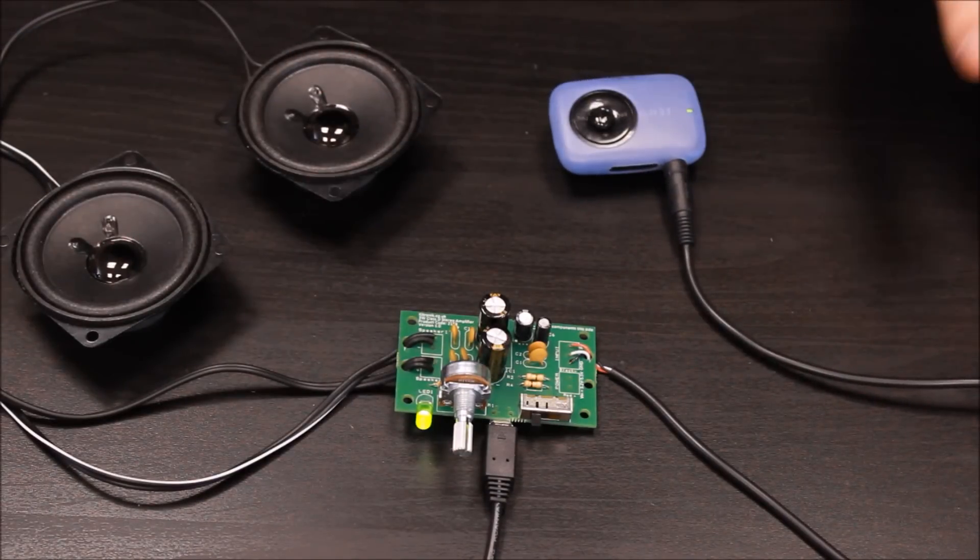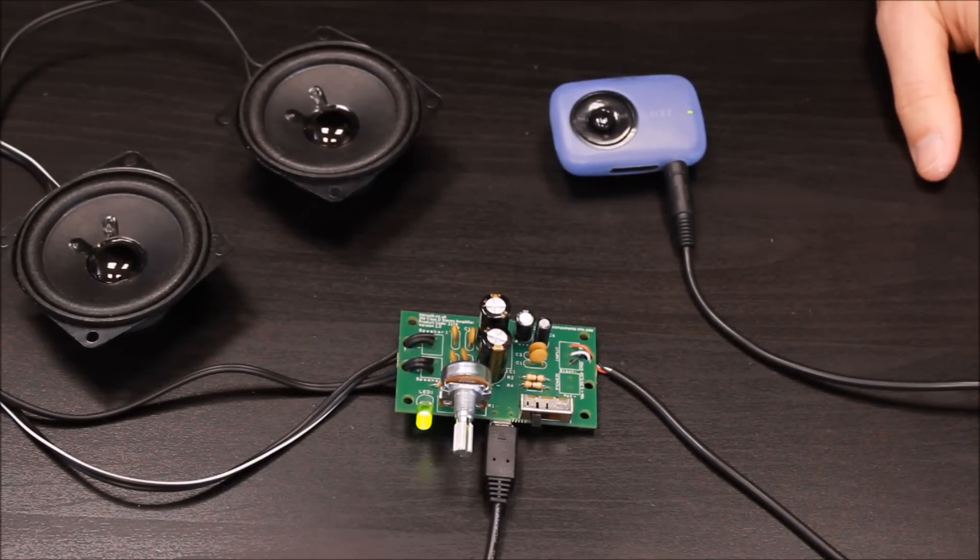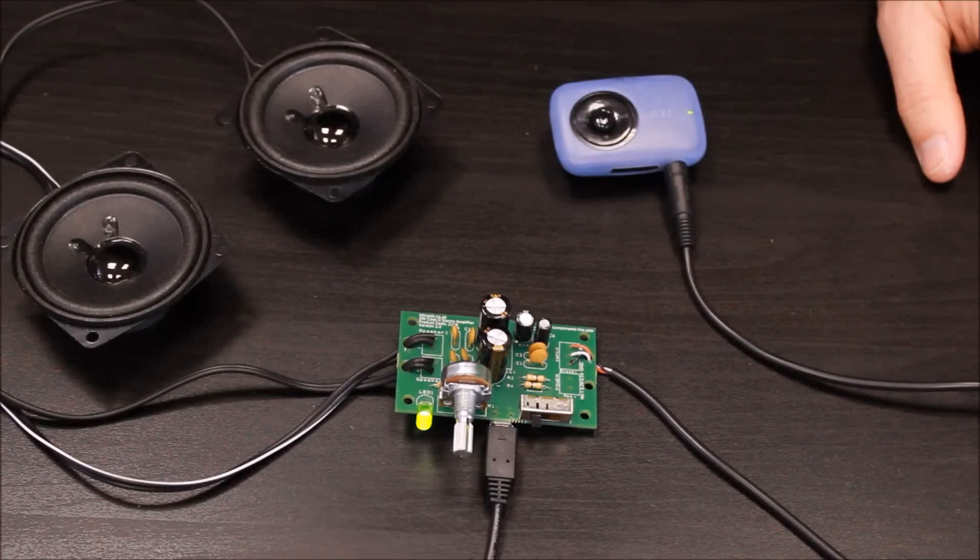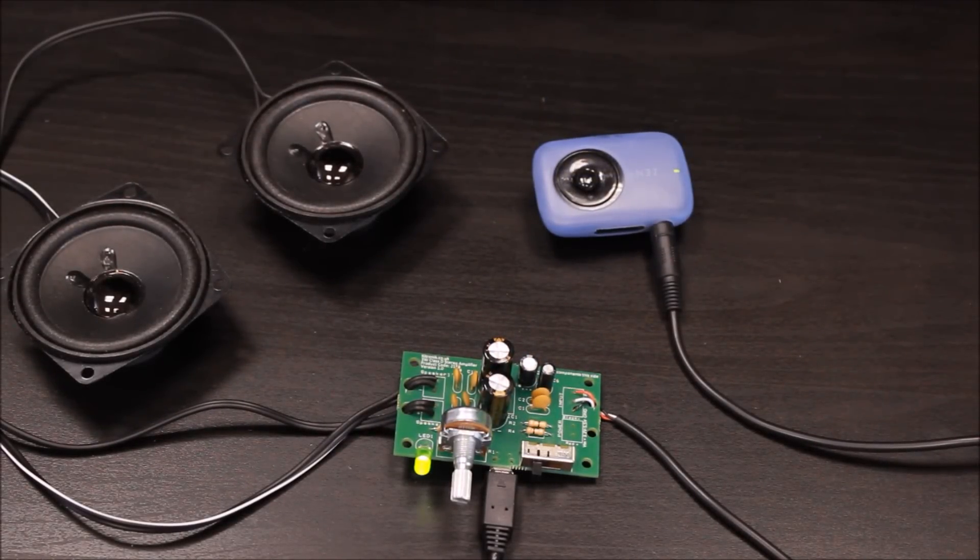So there you have it, a demonstration of our 3 watt Class D amplifier kit. It really is a great little kit. If you would like to find more information on the product, you can do that by visiting the webpage, which is www.kitronic.co.uk forward slash 2158. Thank you for listening, and we will see you next time.